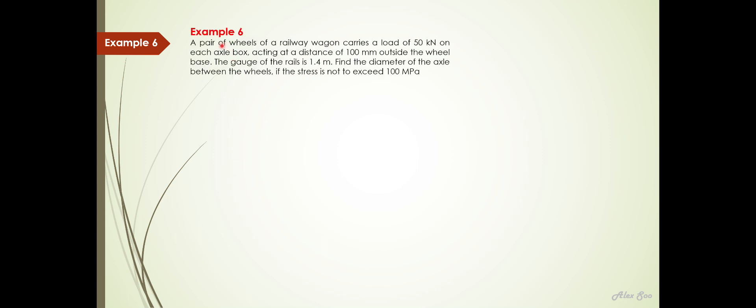So let us read out the questions. A pair of wheels of a railway wagon carries a load of 50 kilonewton on each axle box, acting at the distance of 100 mm outside the wheel base. The gauge of the rails is 1.4 meter. So the length will be taken as 1.4 meter. Now find the diameter of the axle between the wheels if the stress is not to exceed 100 MPa.